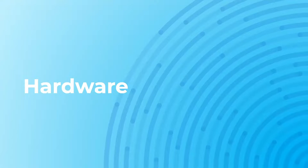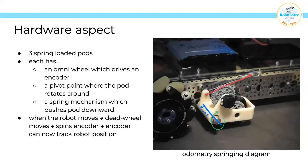Now let's talk about the hardware aspect of odometry. With odometry, you can have a two, three, or four pod setup. This depends on the situation and how much space you have. But with odometry, the more odometry pods you have, the more accurate your data is. With each odometry pod there's an omniwheel which drives the encoder. This omniwheel is a dead wheel, meaning it is free spinning on bearings.